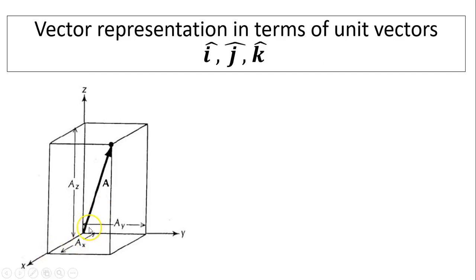Vector ax plus vector ay plus vector az add together to equal a. Now what is ax? ax is the magnitude ax times i. What is vector ay? ay is the magnitude of ay times j. j is the direction of vector ay. Similarly, vector az is az times k.